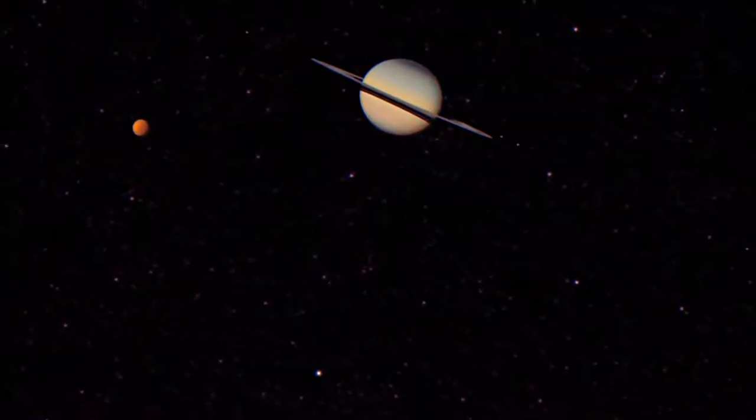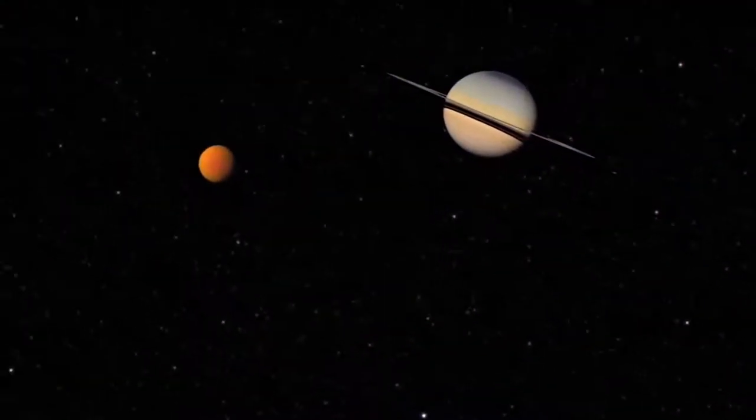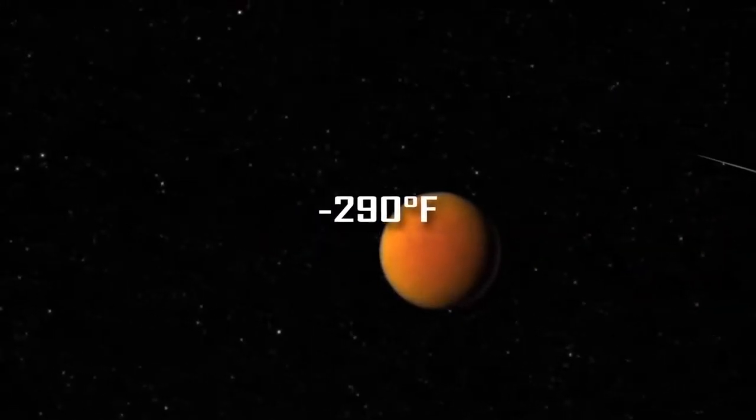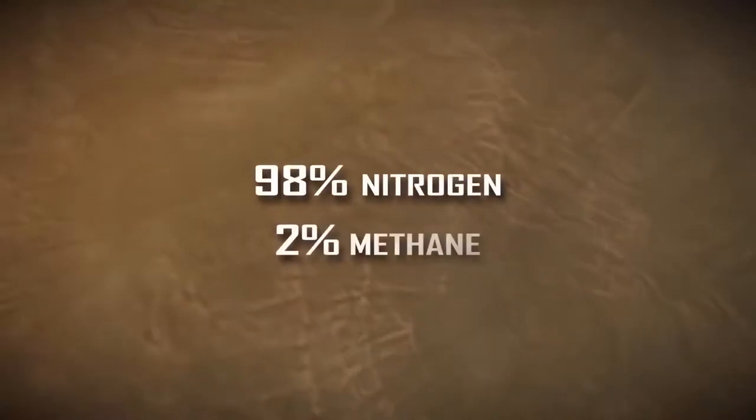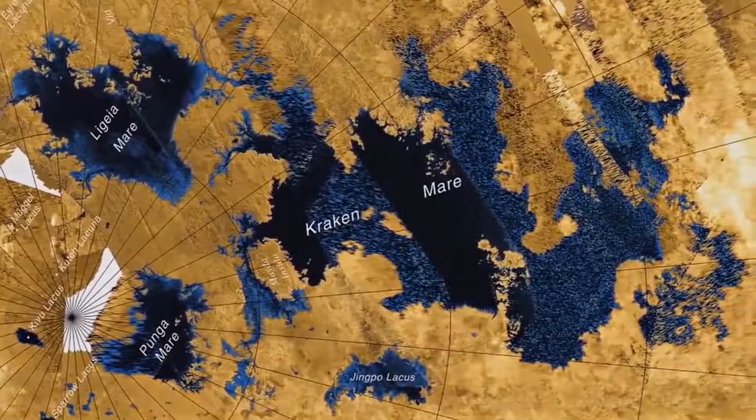Titan is much colder than the Earth, with surface temperatures around minus 290 degrees Fahrenheit range, minus 179 centigrade. Although it sounds like we're talking about water, Titan's atmosphere is 98% nitrogen and 2% methane, and the seas and lakes are liquid ethane and methane.